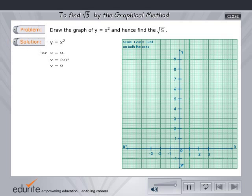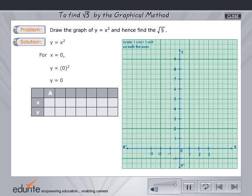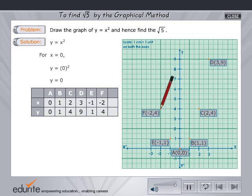For the equation y equals x squared, the x and y coordinates for points A are 0,0. For point B, 1,1. For point C, 2,4. For point D, 3,9. For point E, minus 1,1. For point F, minus 2,4. For point G, minus 3,9.